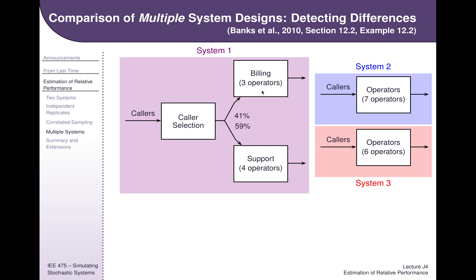On top of that, whereas in the original case you had idle operators while customers were queuing, that wouldn't happen here. Because if customers start queuing, they could just get routed to another operator and be confident that operator could do either job. Now, since you've actually ended up reducing the wait time and had a better utilization of operators, it's possible that you don't actually even need to staff all seven operators — you might be able to get away with six operators.